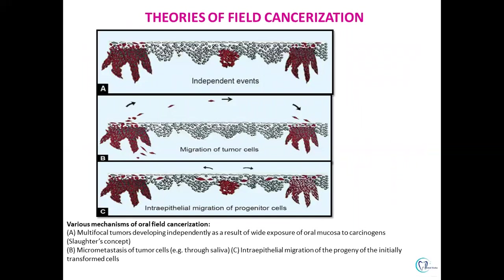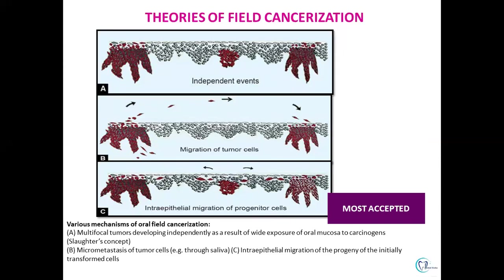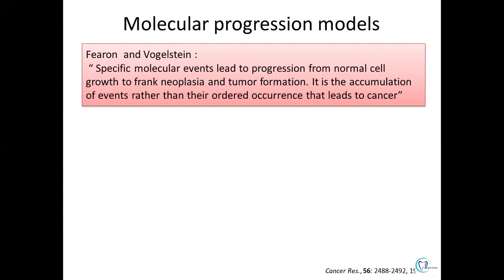Various theories have been proposed for field cancerization. The first, by Slaughter, hypothesized multifocal tumors developing independently at different sites due to mucosal exposure to carcinogens such as tobacco or chemicals. The second is the micrometastasis theory, where tumor cells metastasize via saliva from one site to another. The third — and most accepted — is the intraepithelial migration theory, where a transformed cell migrates intraepithelially from one site to another to form the secondary tumor.